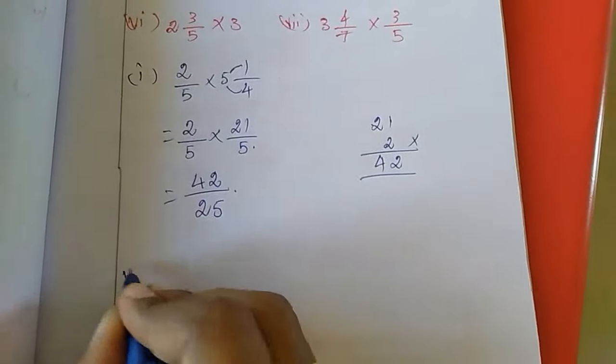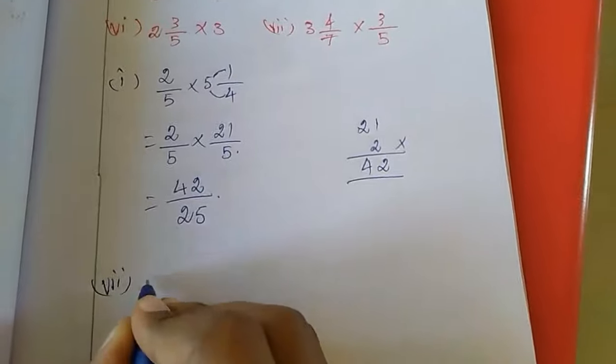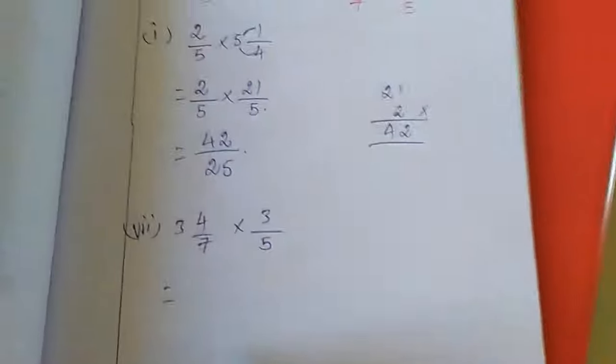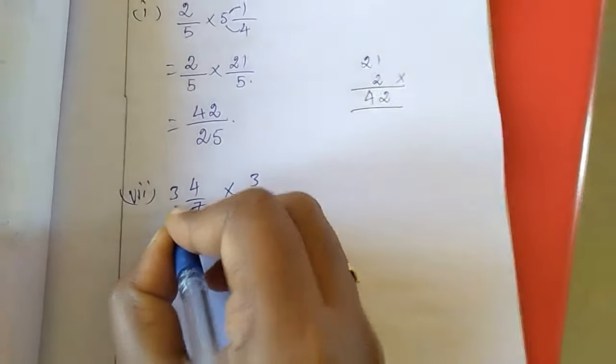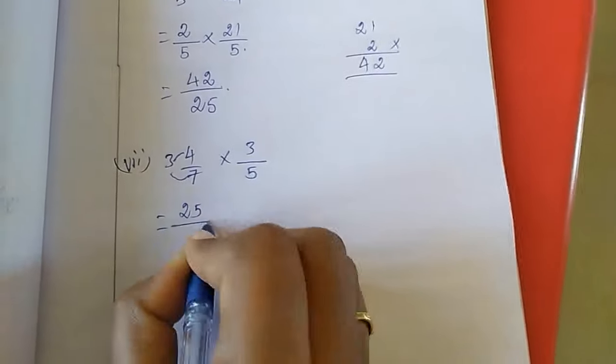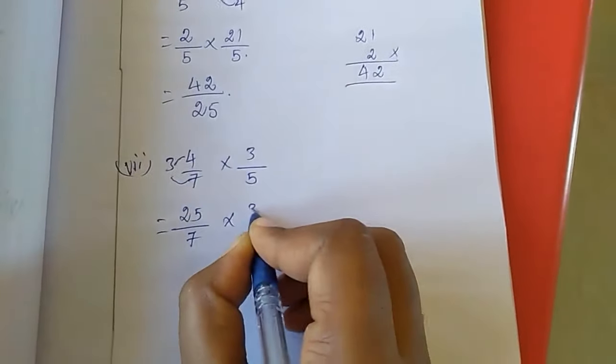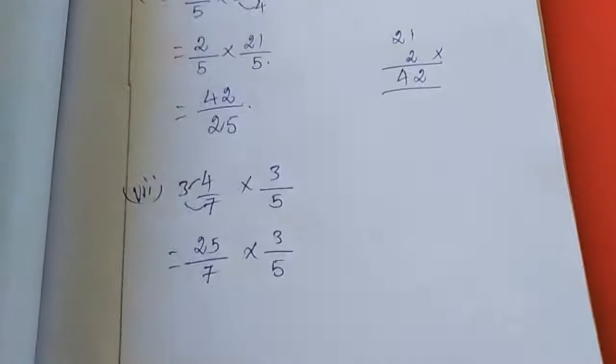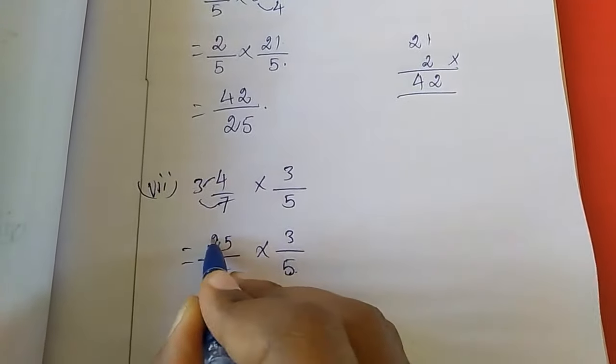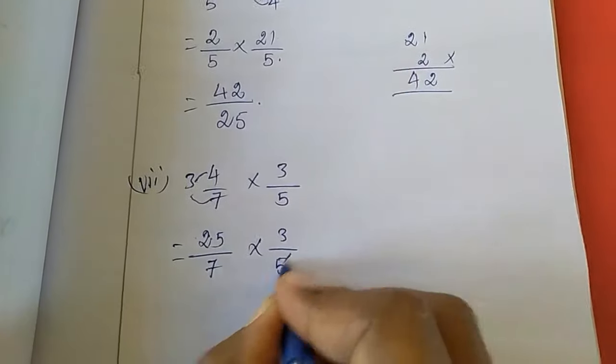Now last sum, last sum is 7th sum. See here, 7th sum is 3 and 4/7 into 3/5. Here, 3 times 7 is 21, 21 plus 4 is 25, so 25/7 into 3/5. Here you have to see, this 5 and 25 will come in 5 tables, so we can cancel this.